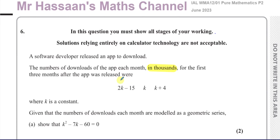So that's the number of downloads after the first month, after the second month, and after the third month, in thousands. k is a constant. Given that the numbers of downloads each month are modelled as a geometric series, show that k squared minus 7k minus 60 equals 0.